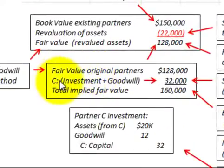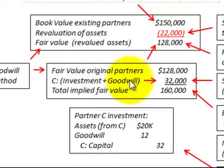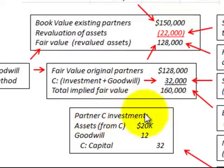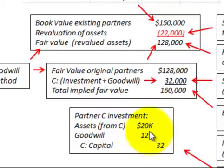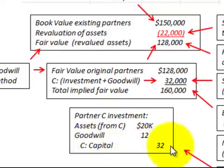Looking at the calculation, Partner C made an investment of $20,000 plus received $12,000 worth of goodwill, totaling $32,000. Here's how we record Partner C's investment: assets are debited or increased by $20,000, goodwill is debited or increased by $12,000, and Partner C's capital account is credited or increased by $32,000.